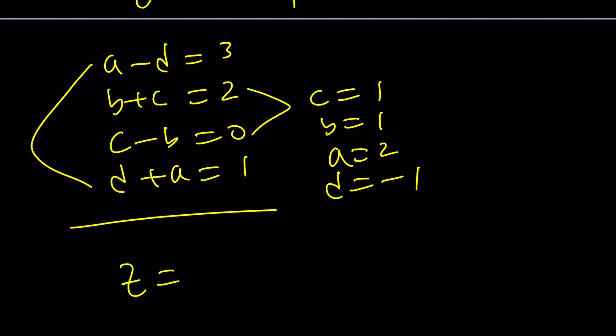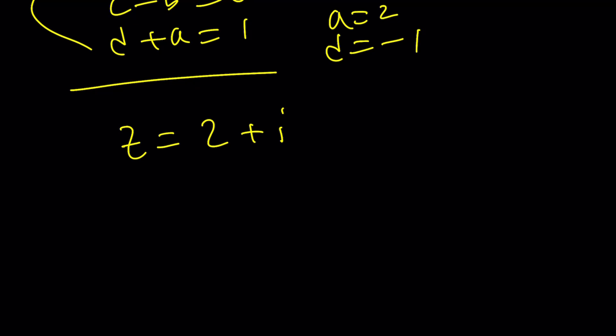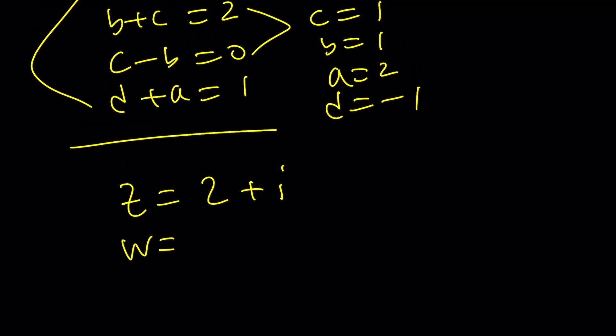Let's put it together. z equals a plus bi. bi is 1i. And w is c plus di. And that's 1 minus i. Great. Is that the solution set? Yes. And the solution is unique. Cool. Alright. Great. But it's rather long, right?